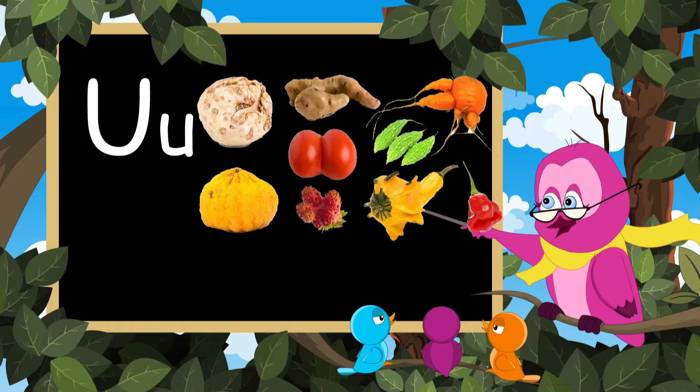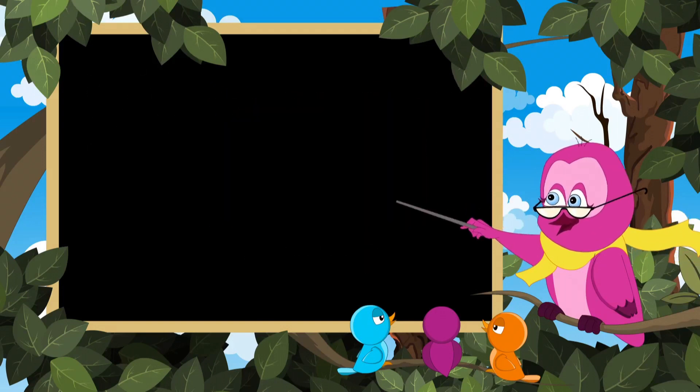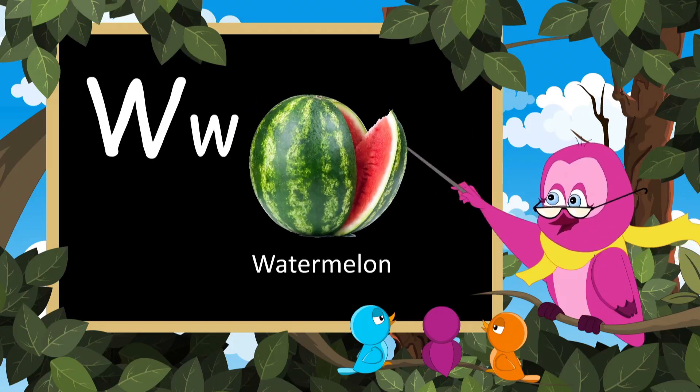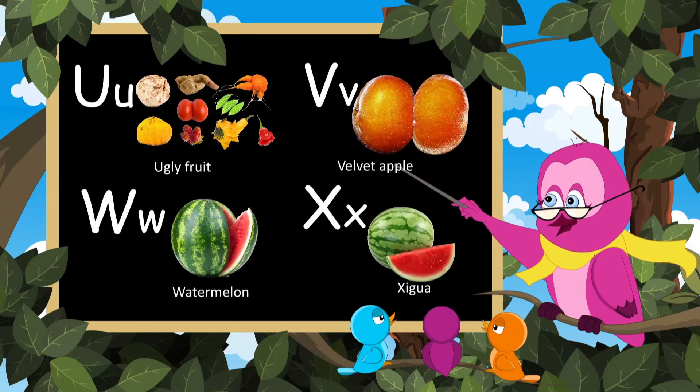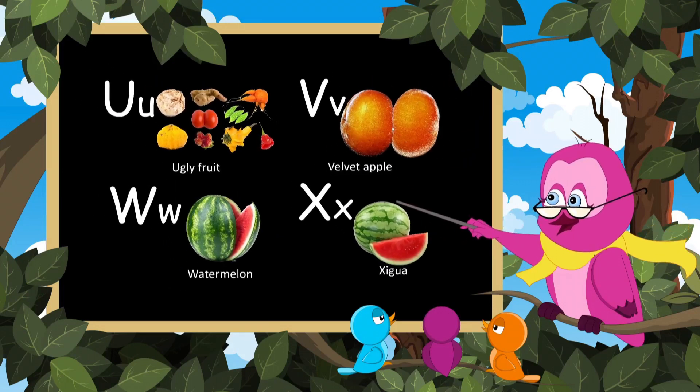U for ugly fruit, V for velvet apple, W for watermelon, X for ziggua fruit. These are all for fruits, sing with me.